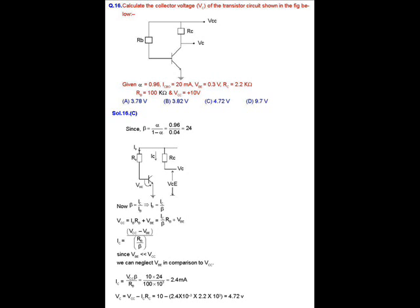Now if we have to apply the KVL in the output loop, we will get the collector voltage Vc equals Vcc minus Ic·Rc. If we put the values of Vcc, Ic, and Rc in this equation, we will get Vc equals 4.72 volts. That is, option C is the correct option.